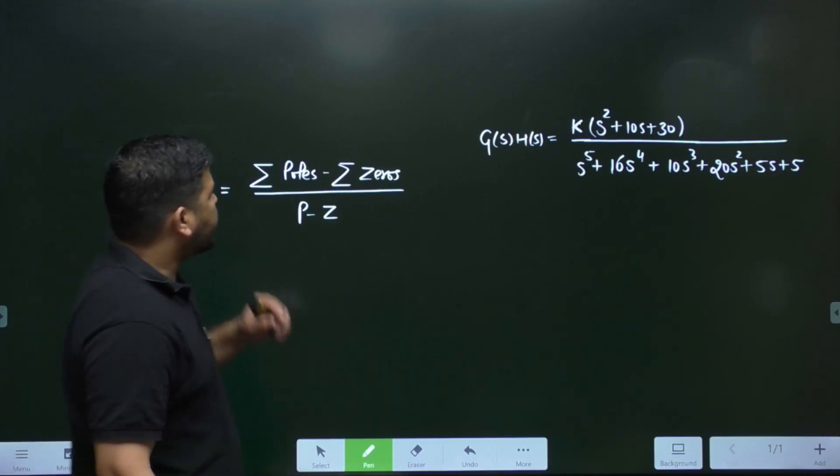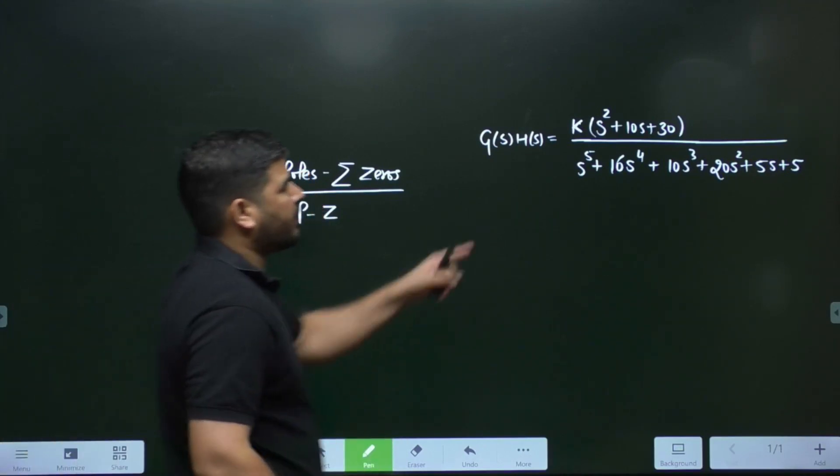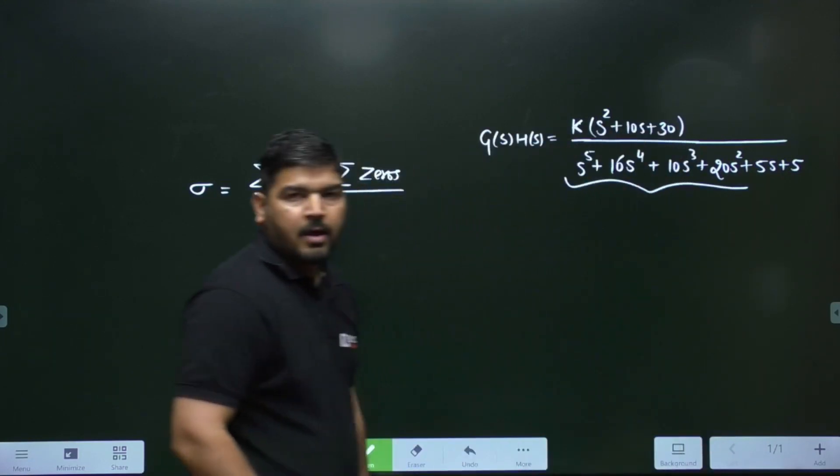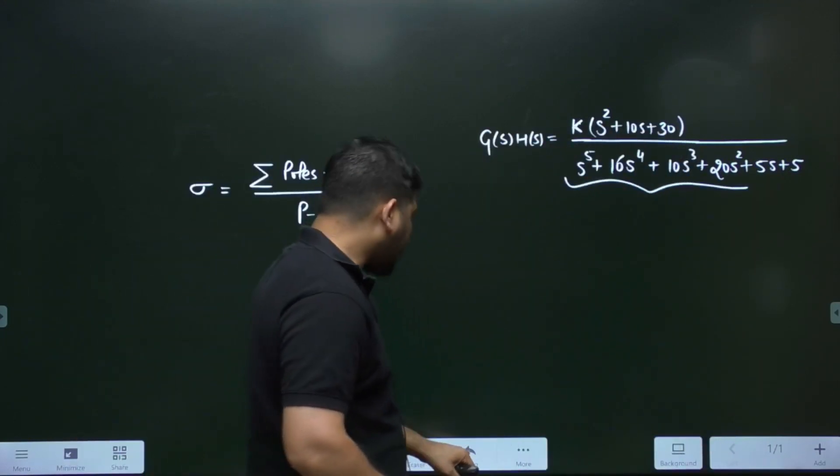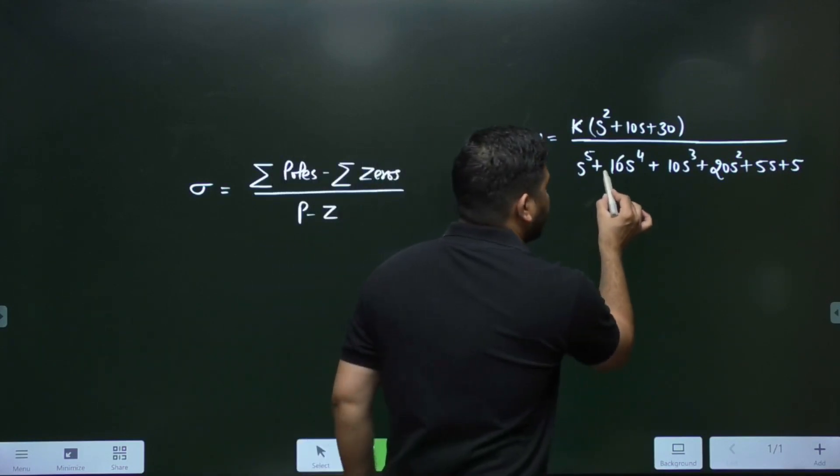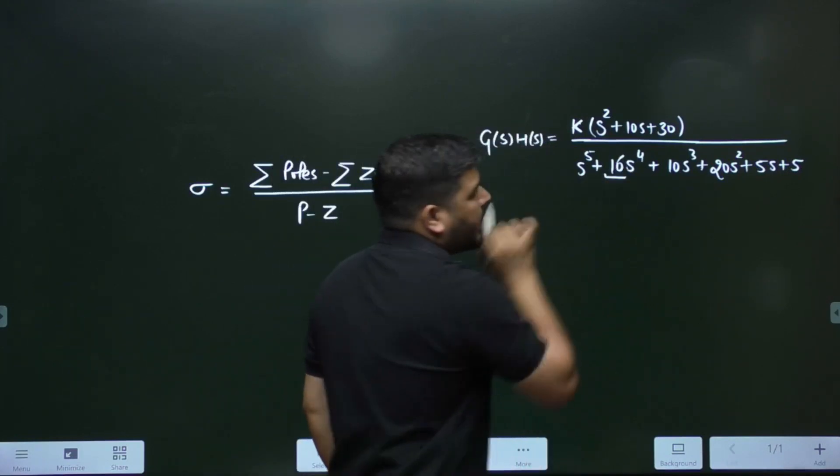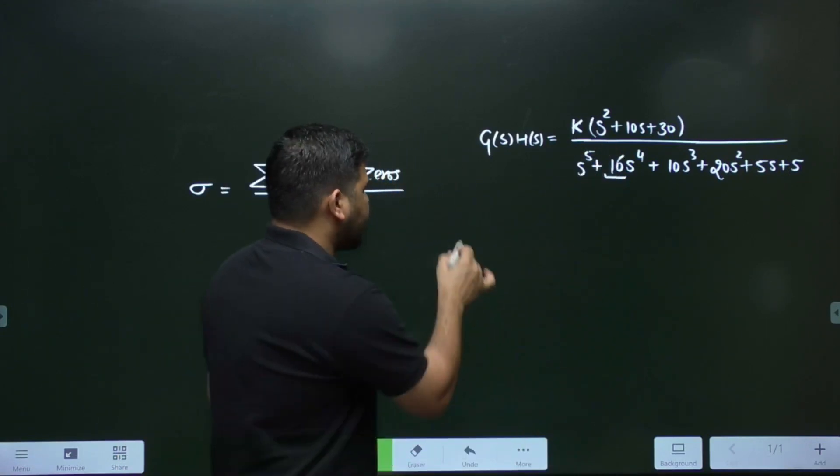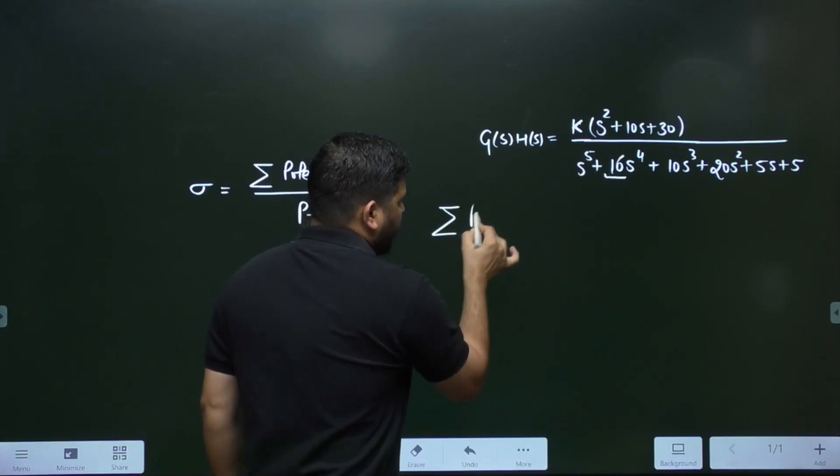But you can directly see the sum of the poles in this expression. We know that the denominator will show you the pole location. From this denominator, you can see that the coefficient of the second highest power, if you take the negative of that, that will be the sum of the poles. So sum of the pole will be minus 16.